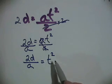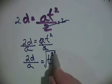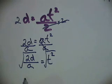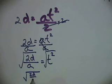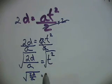Now, if I want to get t by itself, I have to take the square root of both sides. Now, if I take the square root of both sides, I'm left with the square root of 2d over a is equal to—the t squared square root is equal to t. And so I've solved that using algebra. Solve for t.